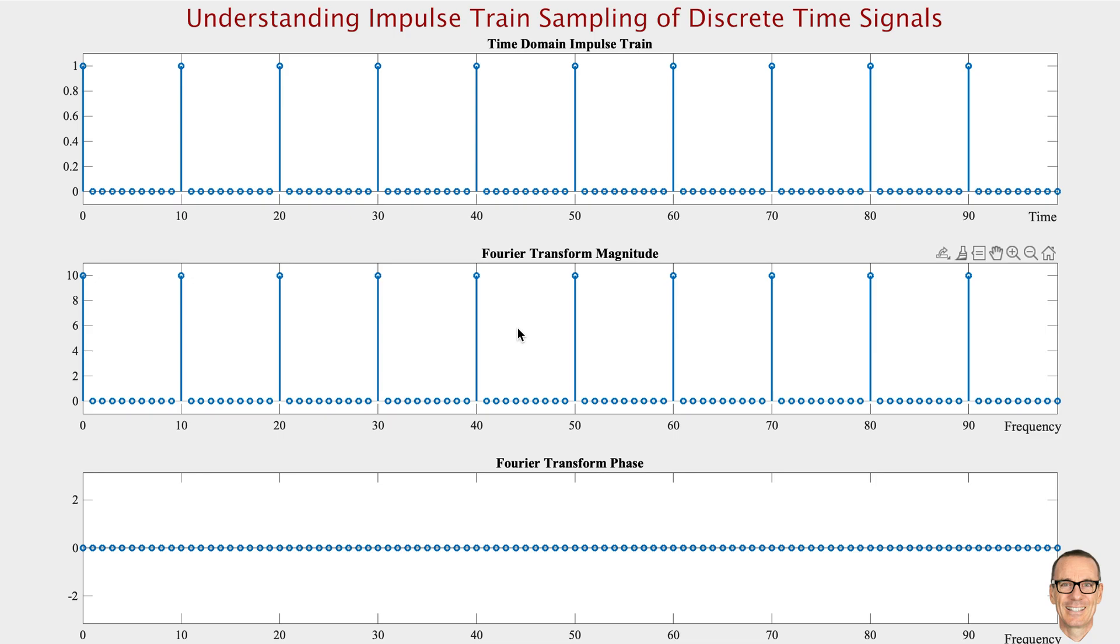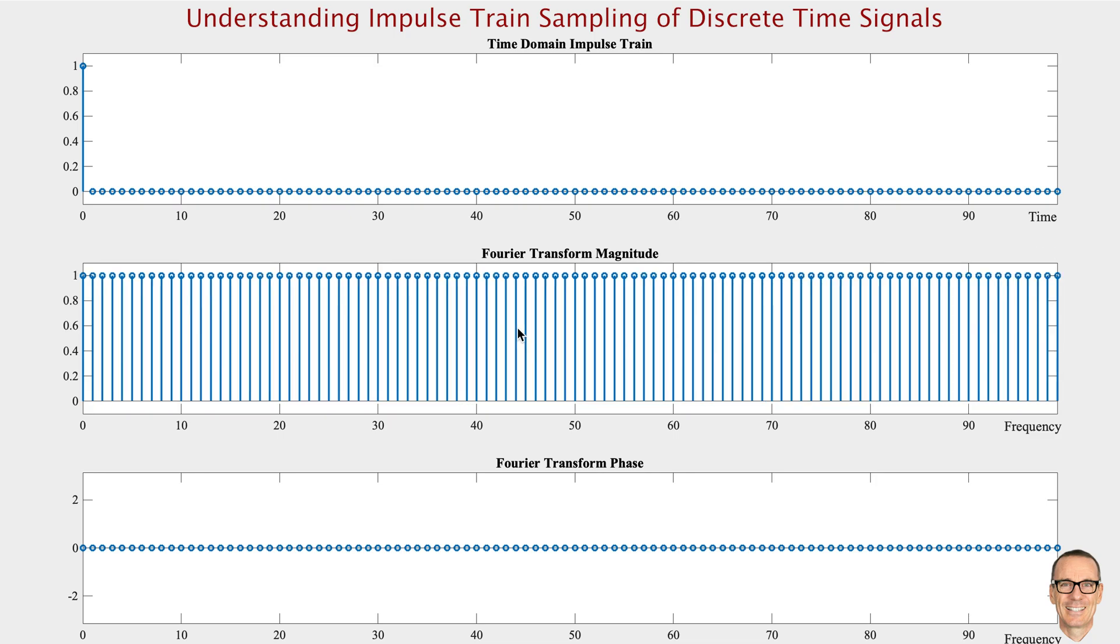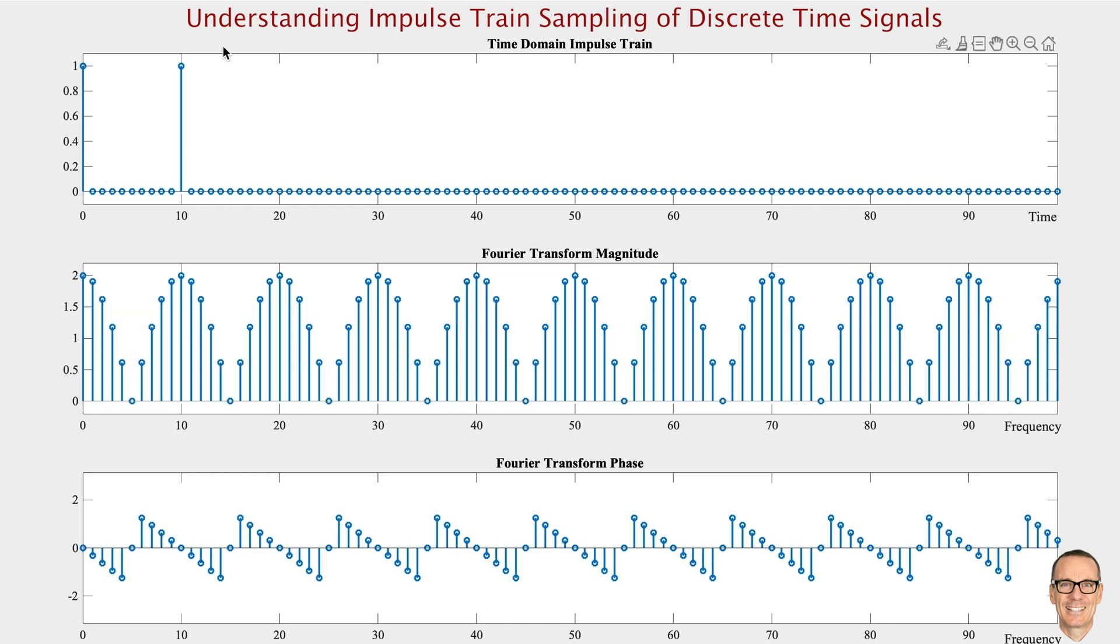So why is that? Let's work that out by building it up from the start. Here's our single impulse. Let's add another impulse. Here we've got this second one. Clearly we can see it's not constant anymore in the frequency domain in the magnitude, and we've introduced a phase component.